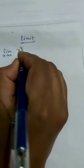Limit chapter, first sutra: limit x tends to a, x to the power n minus a to the power n, divided by x minus a, equals n into a to the power n minus 1.